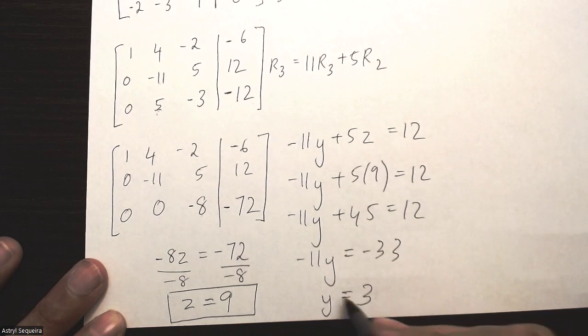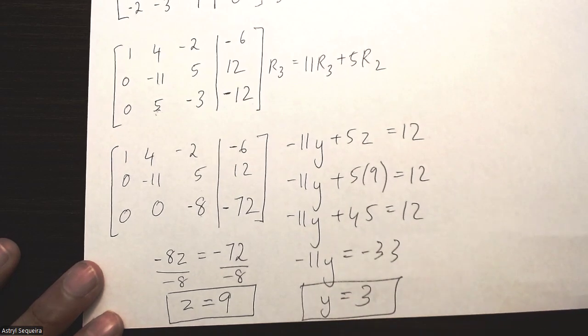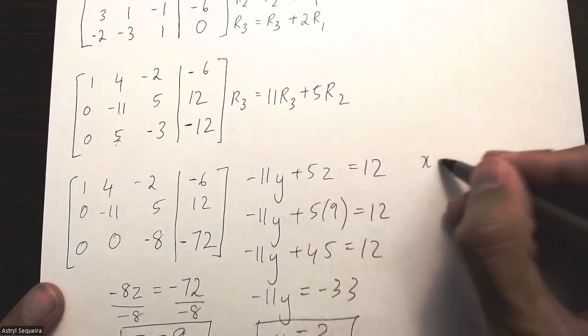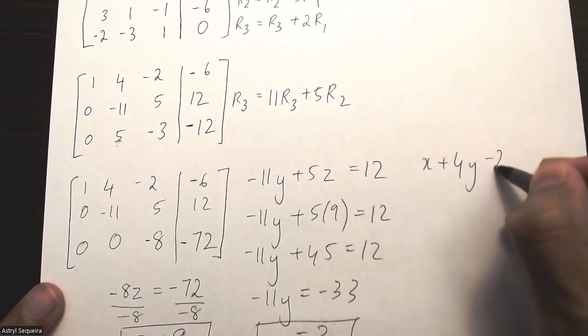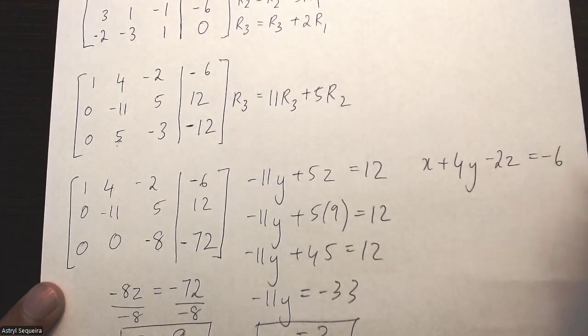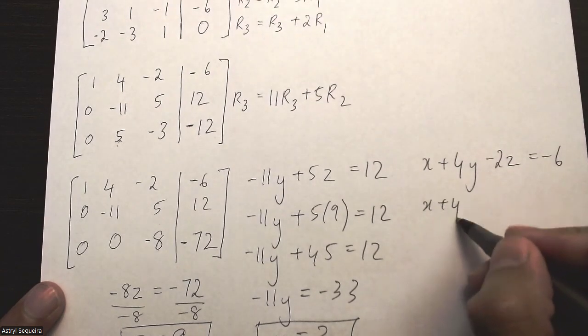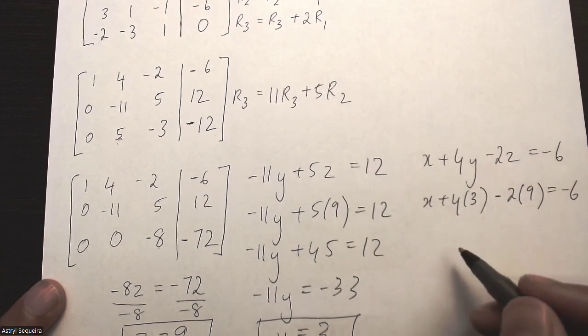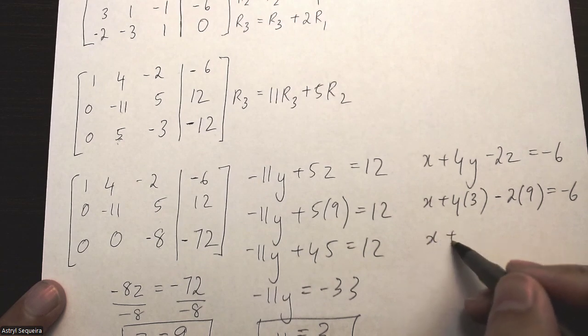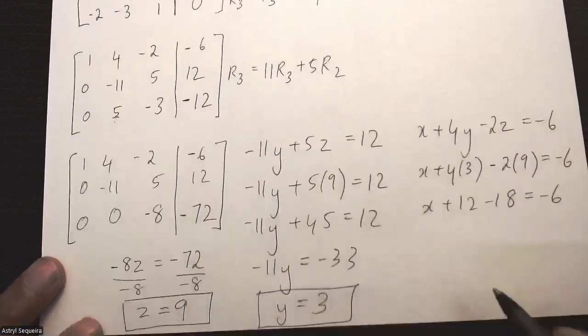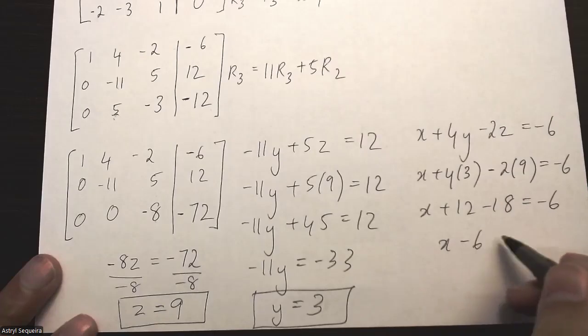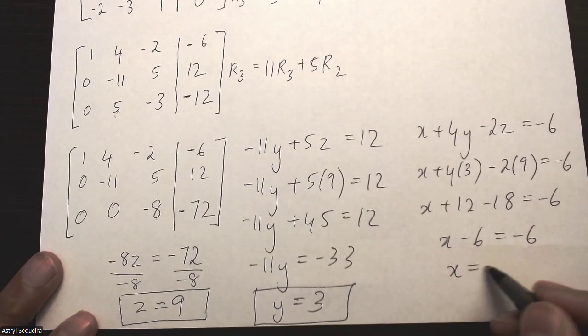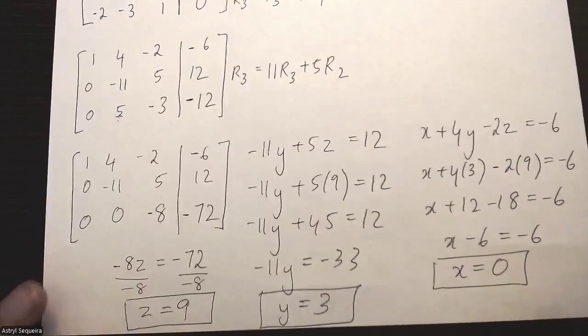Then I'll use the first equation to solve for my x. x plus 4y minus 2z equals negative 6. x plus 4 times 3 minus 2 times 9 equals negative 6. x plus 12 minus 18 equals negative 6. x minus 6 equals negative 6. If I add the 6 on the other side, x just equals 0.